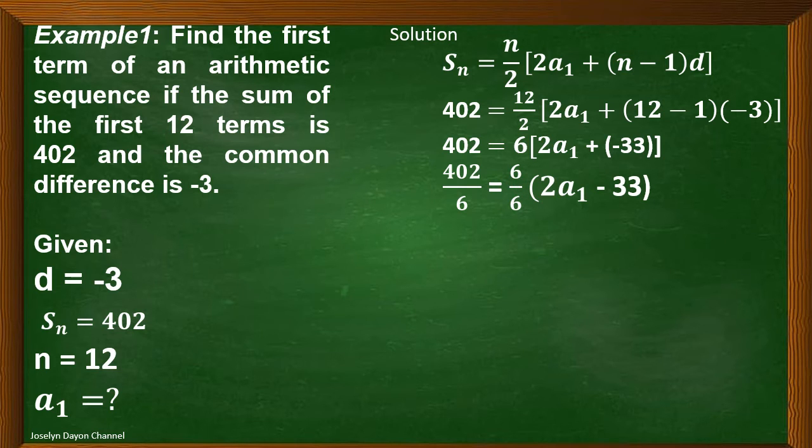So, 402 divided by 6. That is equal to 67. And here, we can divide 6 divided by 6. And that's already 1. So, what remains on the right side of the equation is 2a sub 1 minus 33.